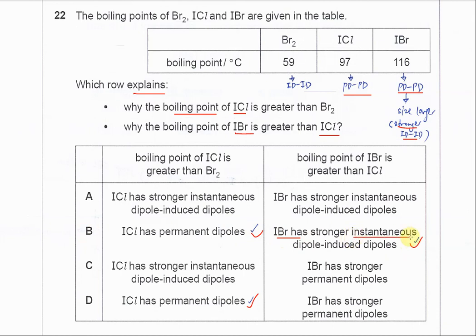Okay, that's why the answer is B: IBr has stronger ID-ID than the ICl. So the answer is B.